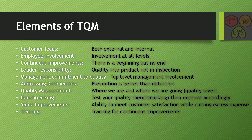Let us start. Elements of total quality management. There are total 10 elements of total quality management which are: customer focus, employee involvement, continuous improvements, leader responsibility, management commitment to quality, addressing deficiencies, quality measurement, benchmarking, value improvements, and training.